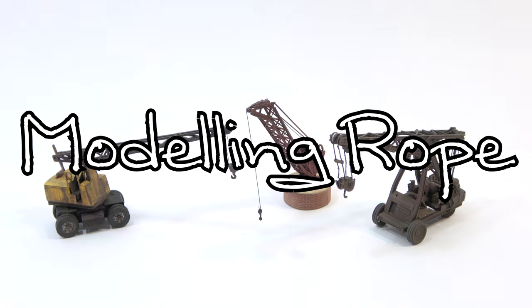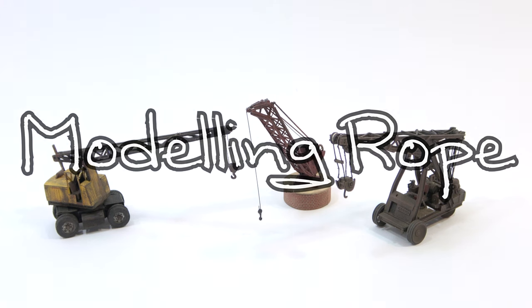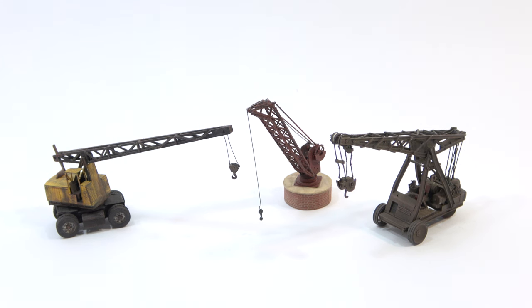If you're going to model steam era railways at some point you're going to need to model some rope. Here's a little selection of the cranes from my layout and as you can see they've all got dangly hooks and so we've had to model some rope to attach those hooks to.